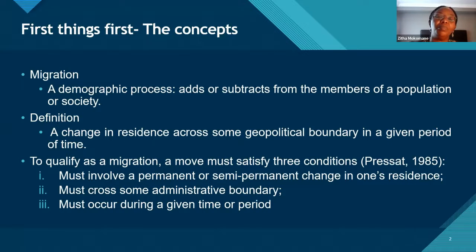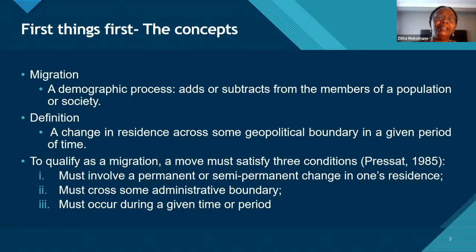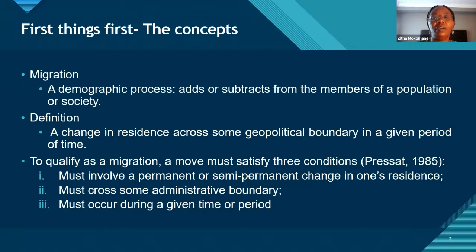With fertility, if there are more births in a society the population will grow, and if there are fewer it will decrease — and mortality works the same way. Demographers define migration as a change in residence across some geographical boundary in a given time.